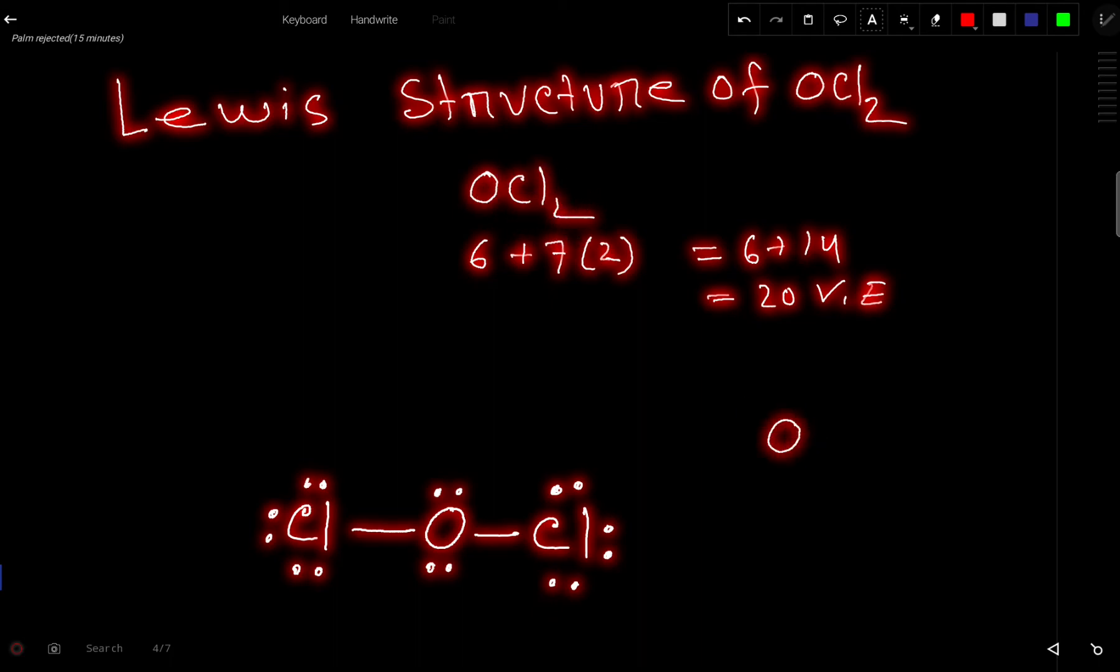Oxygen is the central atom because it is less electronegative or it has the highest capacity of making bonds. So chlorine, chlorine. Let us connect. To connect we need 2 dots or 1 single bond. 1 single bond means 2 dots. So after connecting we have 20 and here we have used 4. So we have 16 valence electrons left.